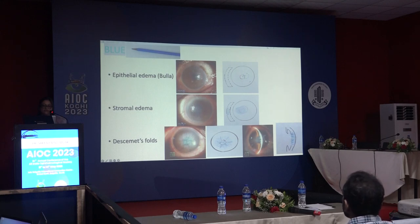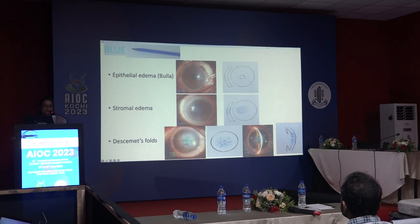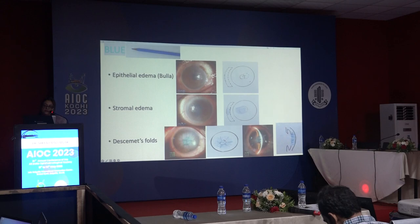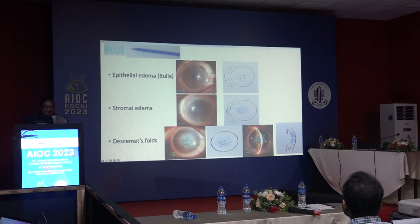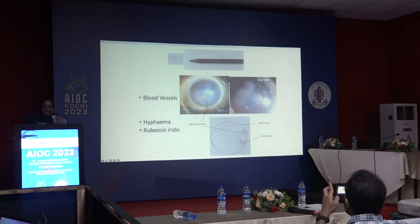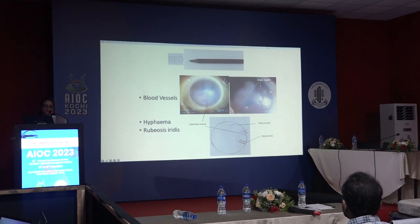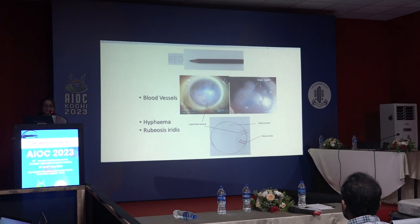Red is used for blood vessels, hyphema, rubeosis, and iritis. Superficial blood vessels are traced across the limbus and shown with wavy lines; deeper vessels cannot be traced across the limbus so are depicted with straight lines starting from the limbus. Ghost vessels in old healed iridocyclitis cases are shown with red interrupted lines.